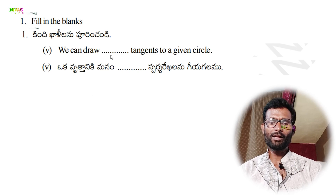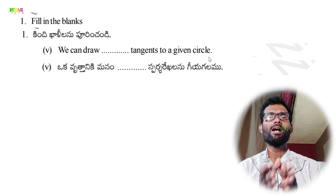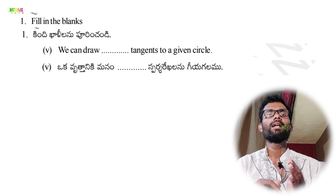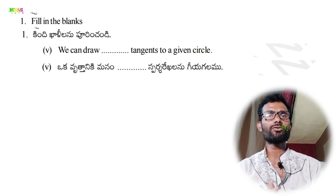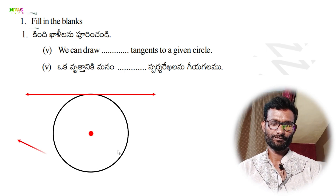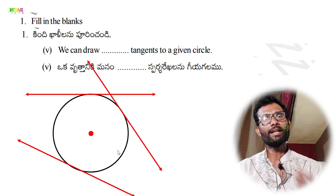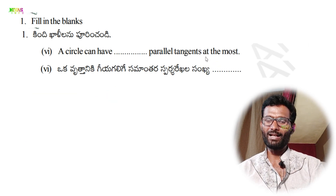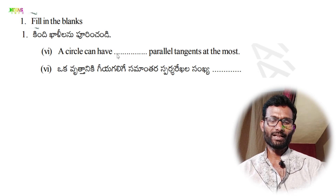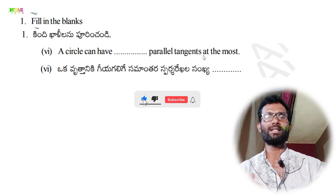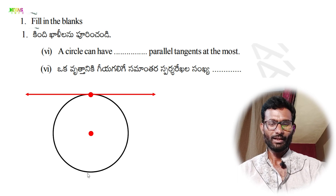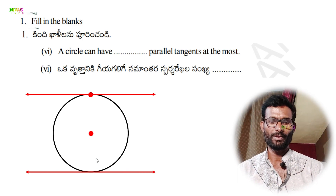Fifth: we can draw how many tangents to a given circle? And sixth: a circle can have how many parallel tangents at the most? We can draw a circle and parallel tangent lines on both sides. The answer is 2.